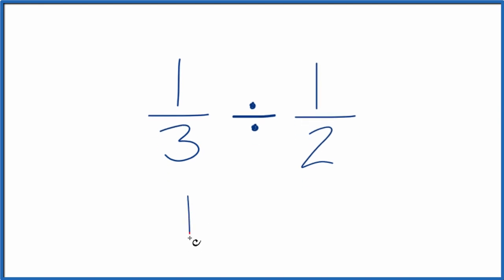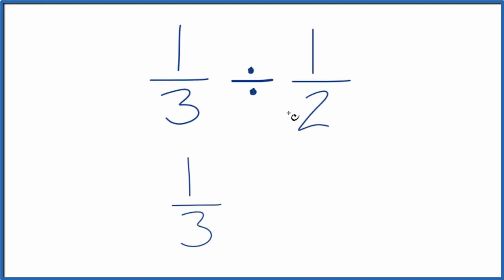We can take one-third, and instead of division here, we can use multiplication. But we're going to multiply by the reciprocal of one-half. That means we put the denominator up top and the numerator on the bottom. So two, that'll be our numerator. And one, that'll be the denominator.